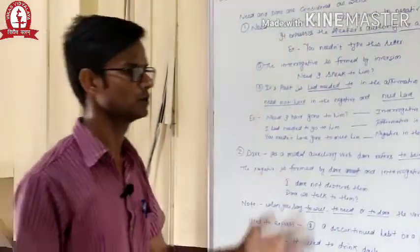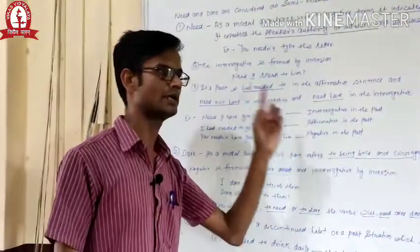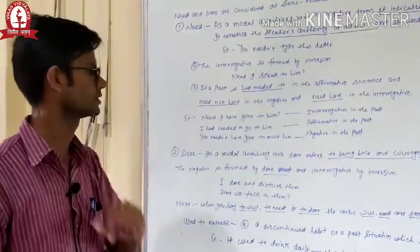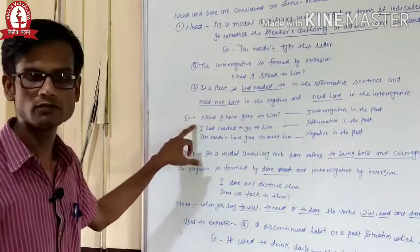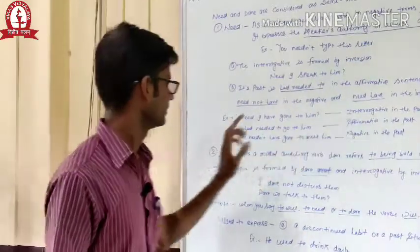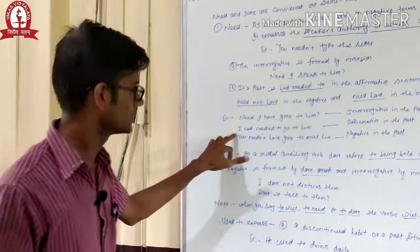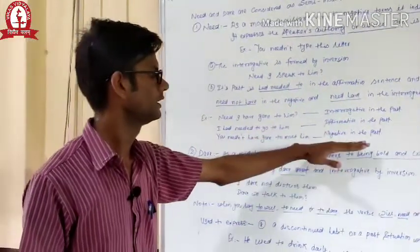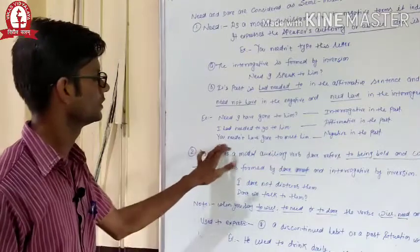So here I am going to show you examples in interrogative, affirmative, and negative. Interrogative example: need I have gone to meet him? Affirmative in the past: I had needed to go to him. And in negative in the past: you need not have gone to meet him.